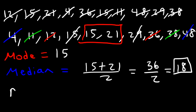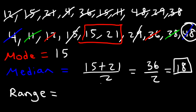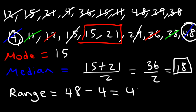Now lastly, let's calculate the range. The highest number is 48 and the lowest number is 4, and that gives us a difference of 44. And so that's it for this video.